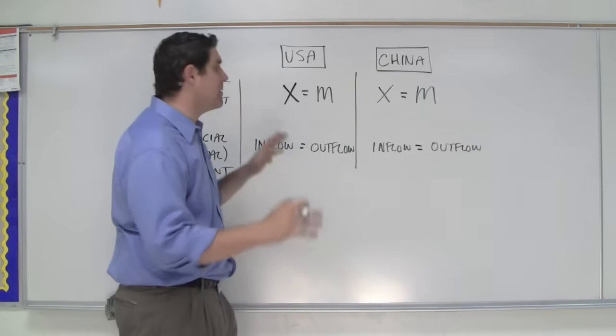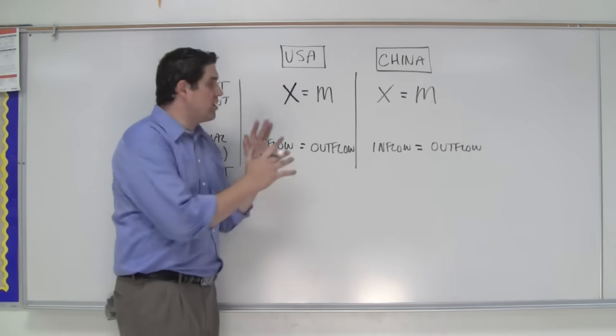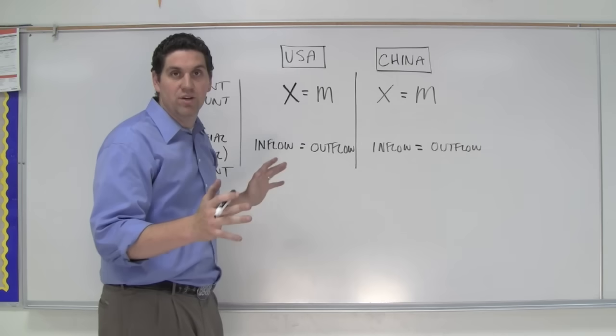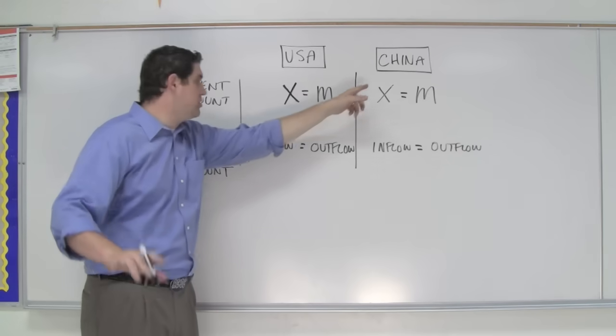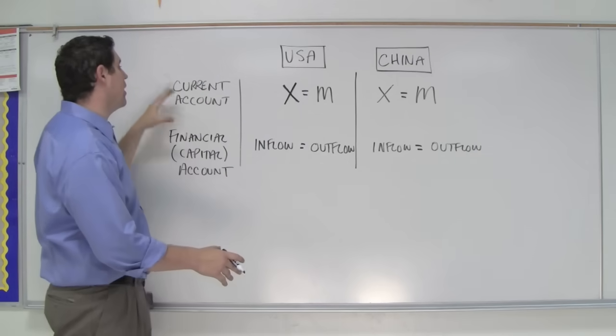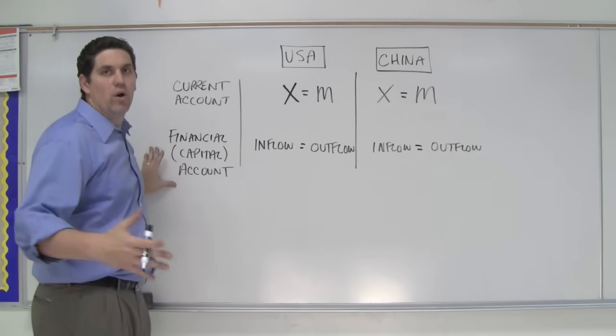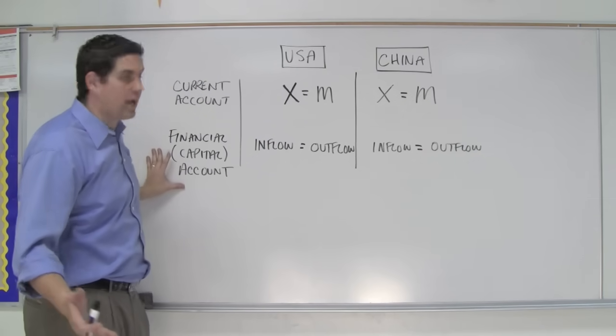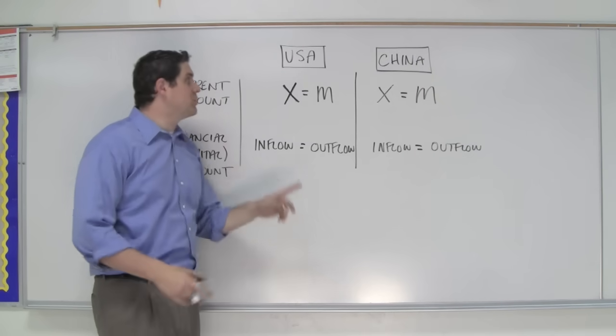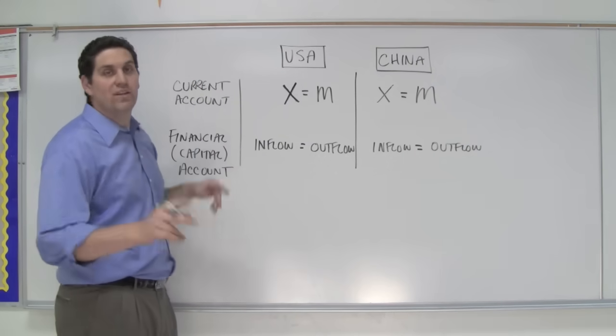A bunch of students get confused on this. I'm going to simplify it so you understand the big picture. What you're going to learn about is two different accounts: something called the current account and the financial or capital account. Two accounts. The best way to explain it is with an example.